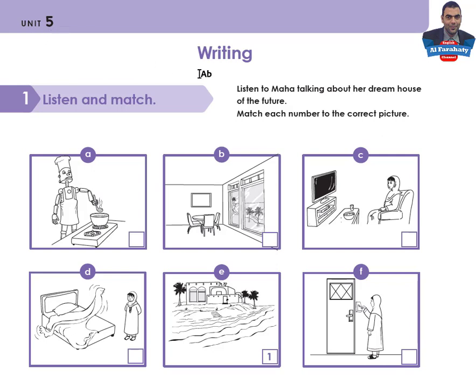Unit 5, Writing Section. Activity 1: Listen and Match. Listen to Maha talking about her dream house of the future. Match each number to the correct picture. Listen carefully and write the numbers, then come back to check your answers.